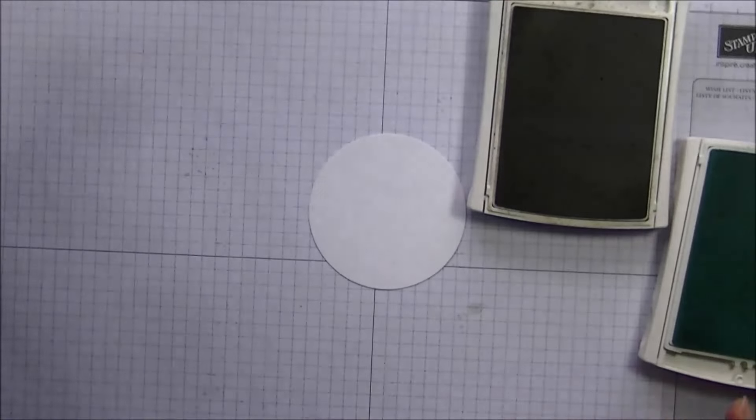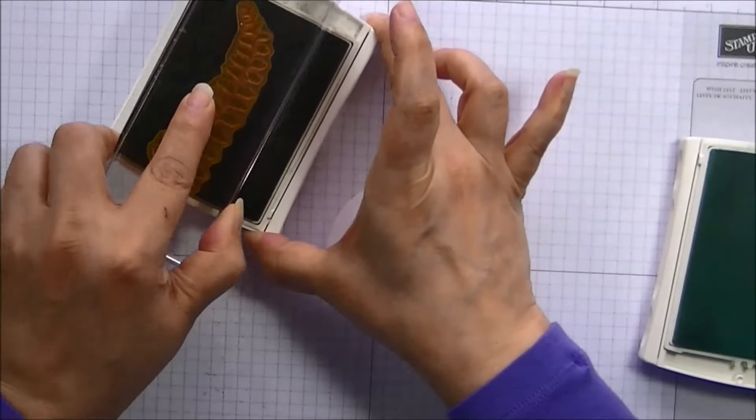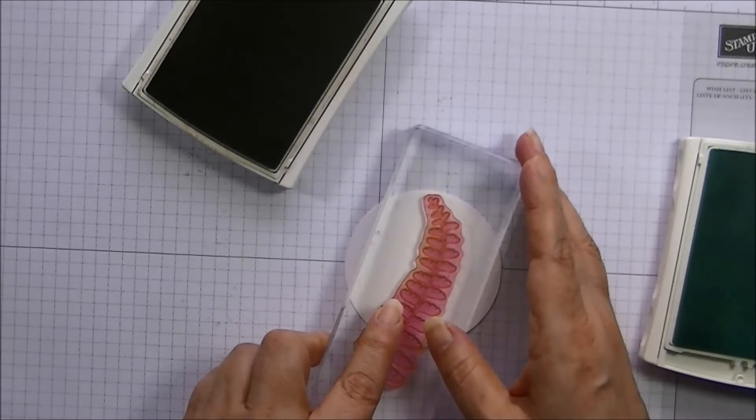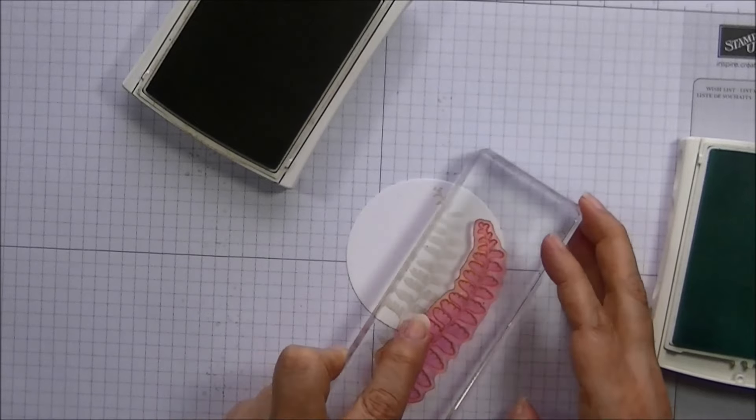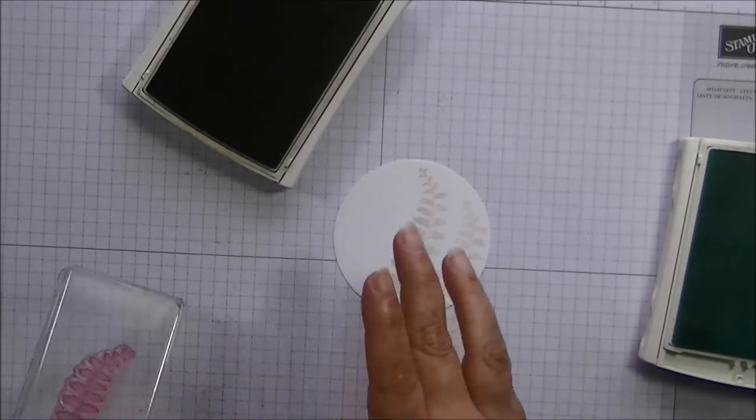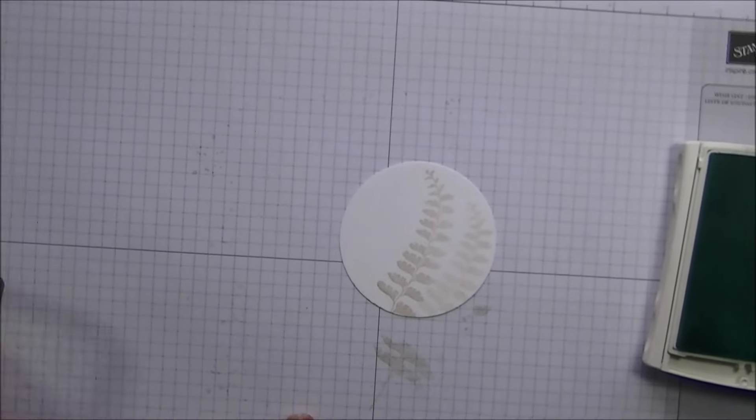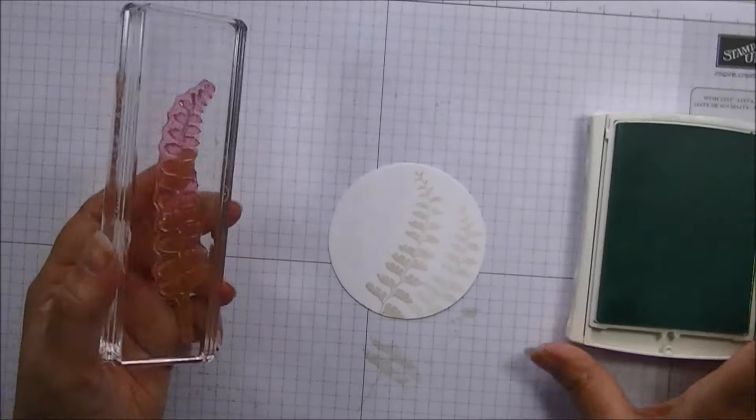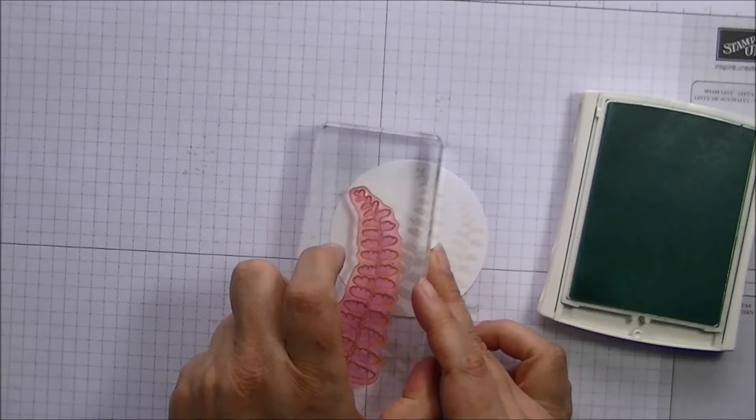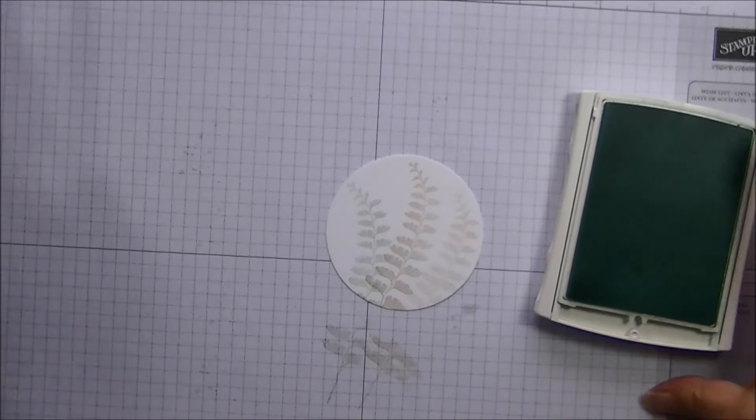And I have my fern mounted here on my eye block. I am going to go ahead and ink it up. I am not going to stamp off. But I am going to come in right in the middle and then move it over. Then we are going to go ahead and fill out that empty space there on our circle with the Pool Party fern. Like that. Isn't that gorgeous?